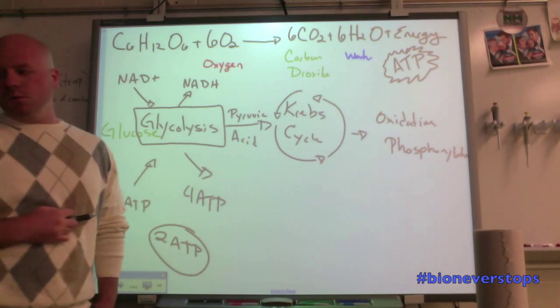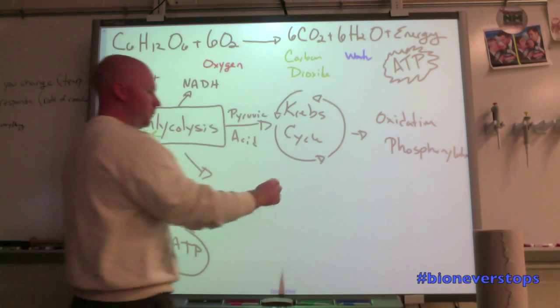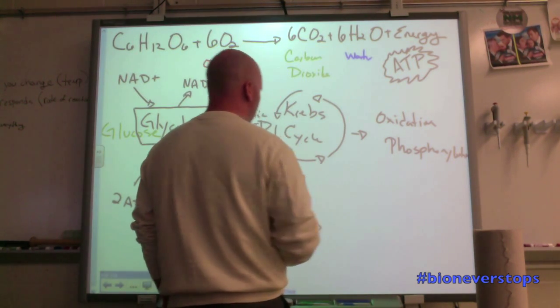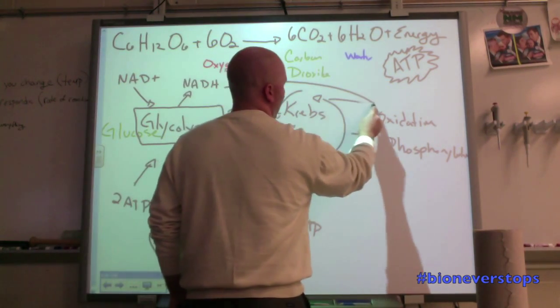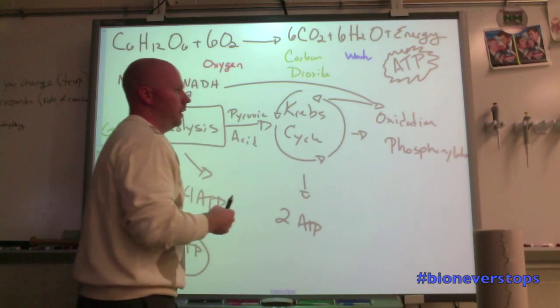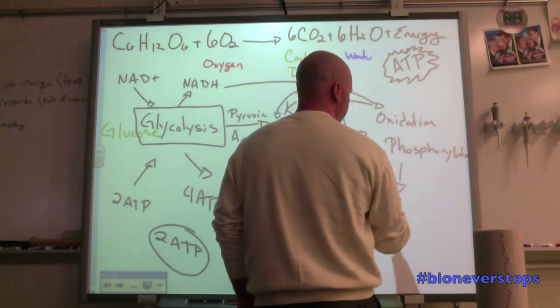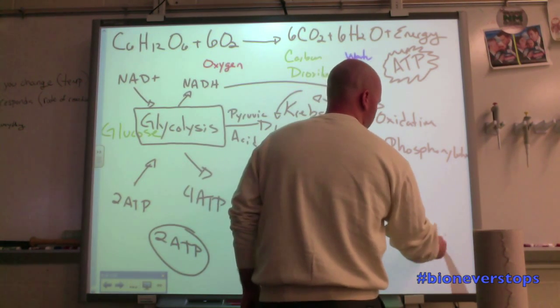Pyruvic acid goes over to the Krebs cycle. We get some more ATP out of that, about two ATP. We get some more electrons that will all get shipped over to oxidative phosphorylation. And this is where we get a majority of our energy, and this is where we can get 32 to 34 ATP.